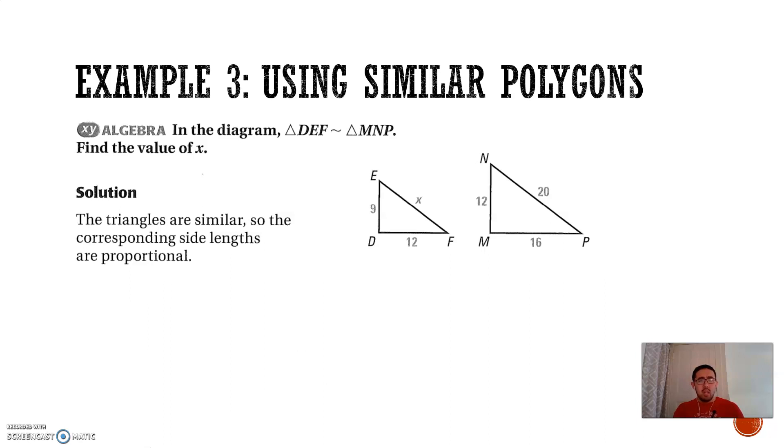Last example: if I have these two similar polygons and I want to find the value of x, well, you're told that they're similar, so you could set up a ratio. You can set up a ratio multiple ways. But we know DEF and MNP, so that means DE and MN should have the same ratio as x to 20.